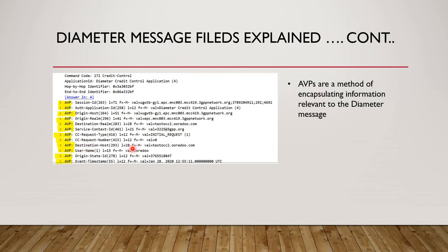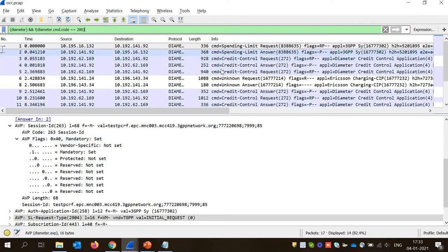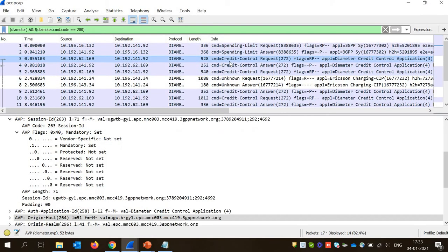Now we have destination host, then the username. As I mentioned, this is a triple-A based protocol, so the username is there to authenticate that the request is from a valid, authenticated user. We also have origin state ID and other fields. I'll show you how these things actually look — let's take this credit control request of diameter.